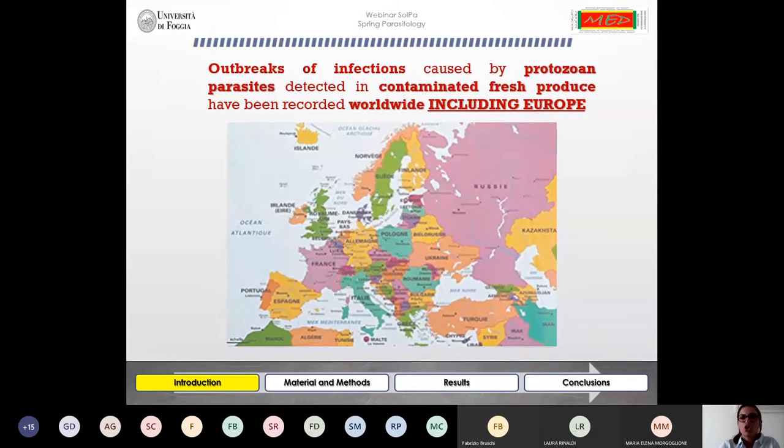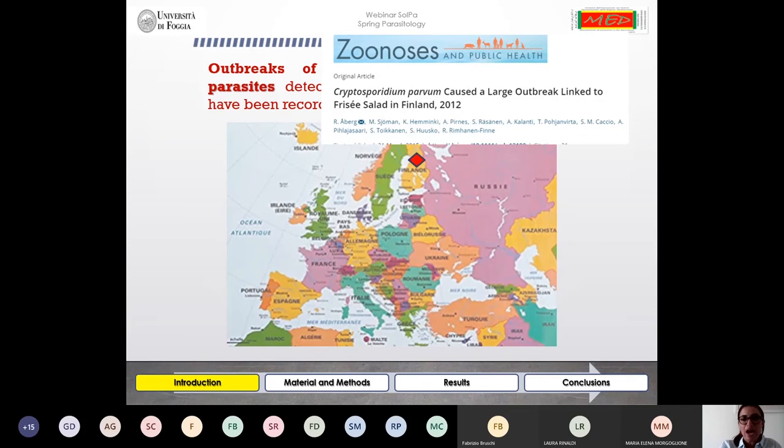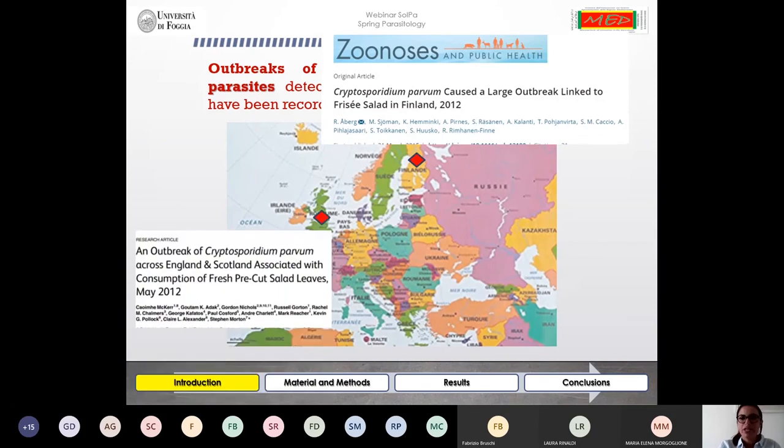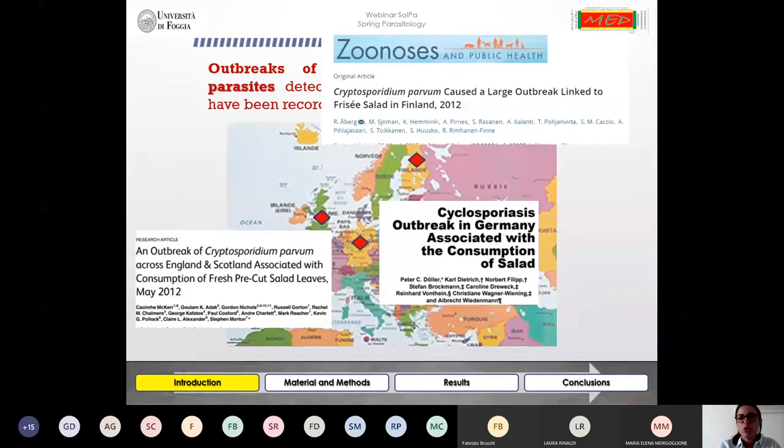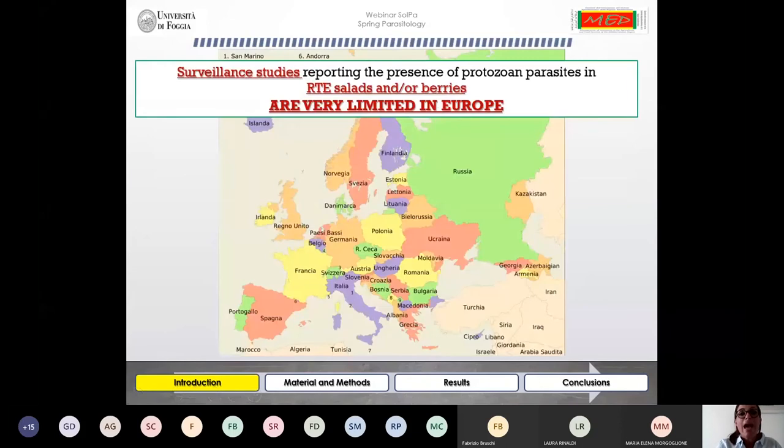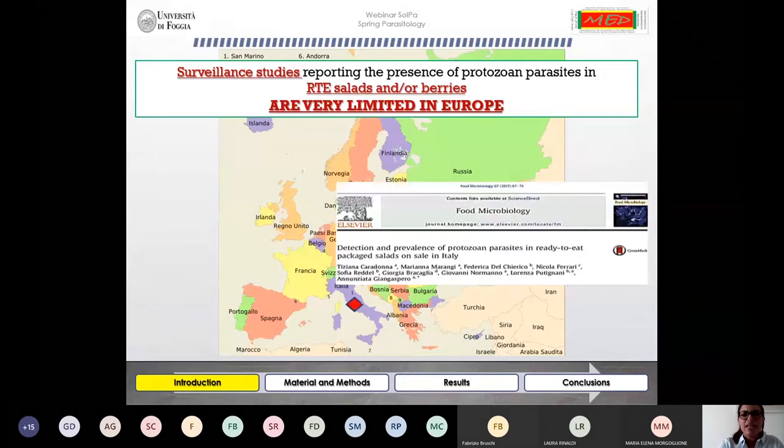Several outbreaks of infection caused by protozoan parasites contamination of fresh produce have been recorded all over the world including Europe. For instance, outbreaks of cryptosporidiosis have been recorded in Finland, England, and Scotland, and an outbreak of cyclosporiasis was recorded in Germany. All these outbreaks were associated with the consumption of salad. However, surveillance studies reporting the presence of these protozoan parasites specifically in ready-to-eat salads and berries are very limited in Europe.